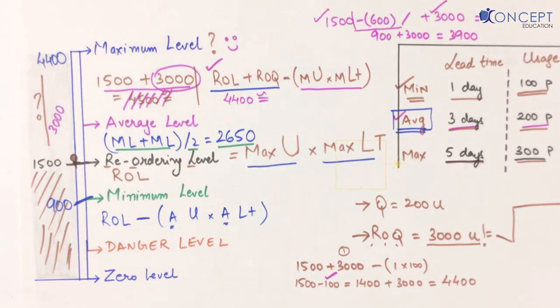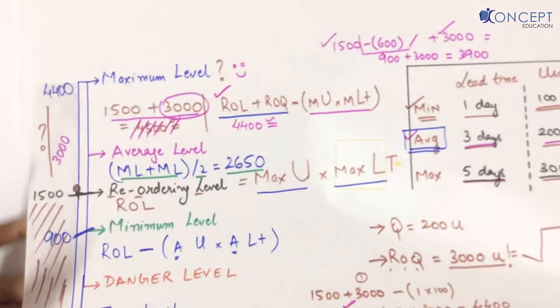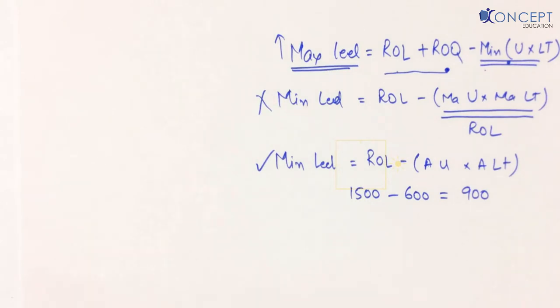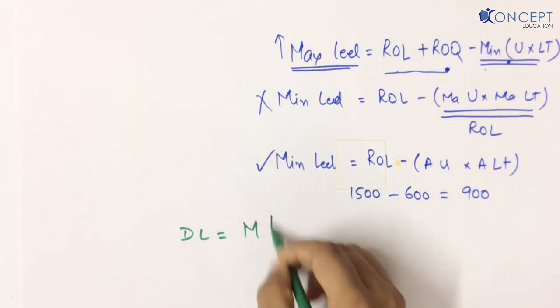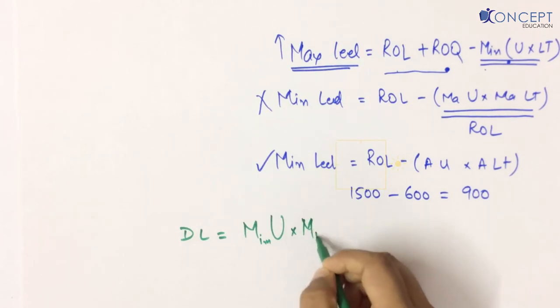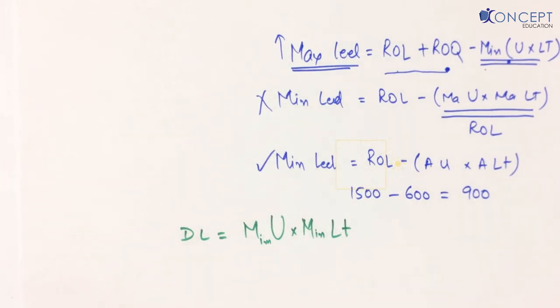Now let's talk about danger level. Danger level is the point at which I need to seriously panic. Danger level has multiple formulas in different industries and books. But the formula I want to give you is: danger level = minimum usage × minimum lead time.